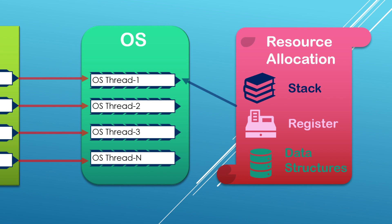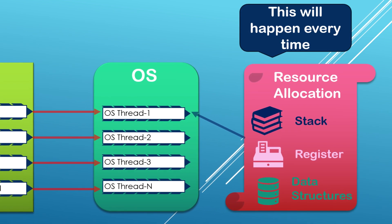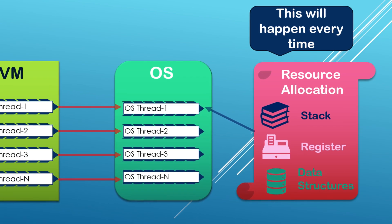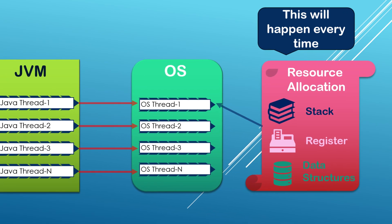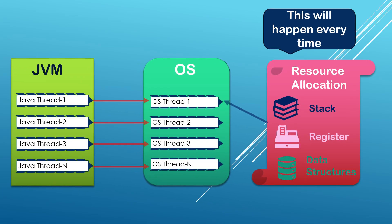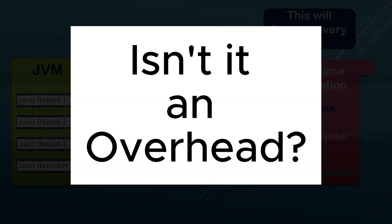If we take our example where 10 threads are created for repetitive tasks, every time 10 new threads will be created and all the operations required to make the thread ready for execution — like resource allocation and deallocation — will be performed again. No matter what the input task is, the same operations happen again and again. So don't you think these steps of creating and destroying threads are just an overhead? How can it be avoided?